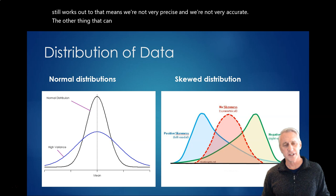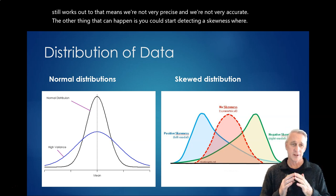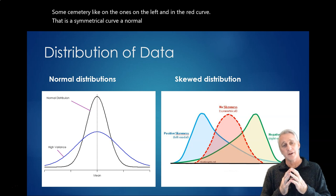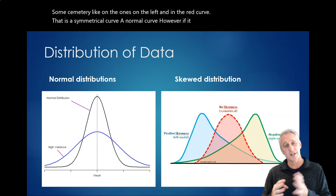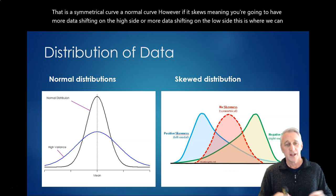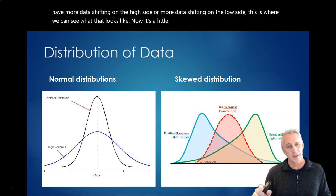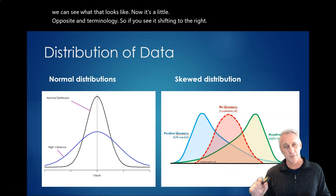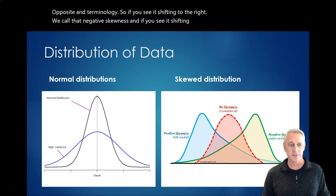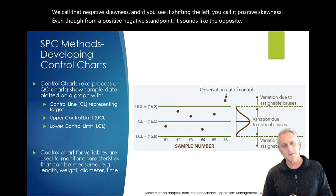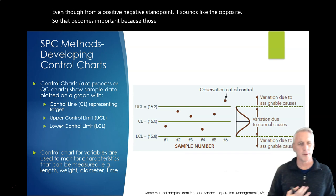The other thing that can happen is you could start detecting a skewness, where some asymmetry, like on the ones on the left and in the red curve, that is a symmetrical curve like a normal curve. However, if it skews, meaning you're going to have more data shifting on the high side or more data shifting on the low side, this is where we can see what that looks like. Now, it's a little opposite in terminology. So, if you see it shifting to the right, we call that negative skewness. And if you see it shifting to the left, you call it positive skewness, even though from a positive-negative standpoint, it sounds like the opposite. So, that becomes important because those are some of the patterns that we want to look for in the data.